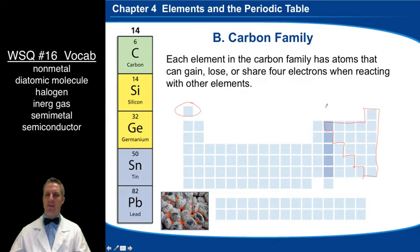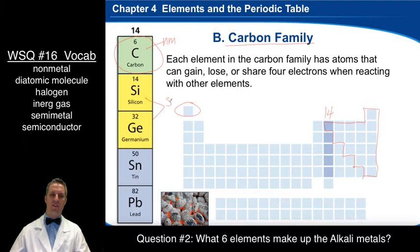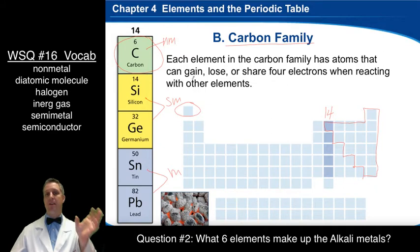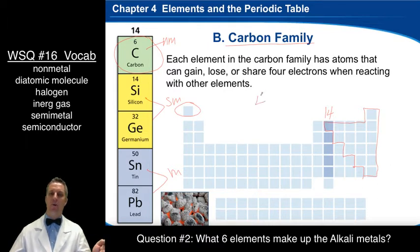Now we can look at them by their families. So family 14 is called the carbon family. Carbon is the only non-metal in family 14. You'll notice silicon and germanium are semi-metals, and tin and lead are metals. But basically what we want to look at is their similarities. Remember, elements in the same family are going to have similar characteristics or attributes. Carbon, silicon, germanium, tin, and lead all have four valence electrons.